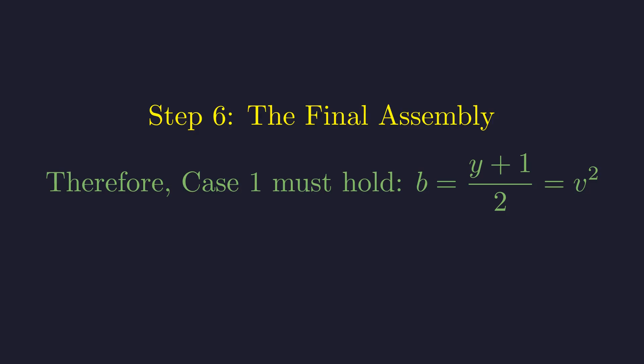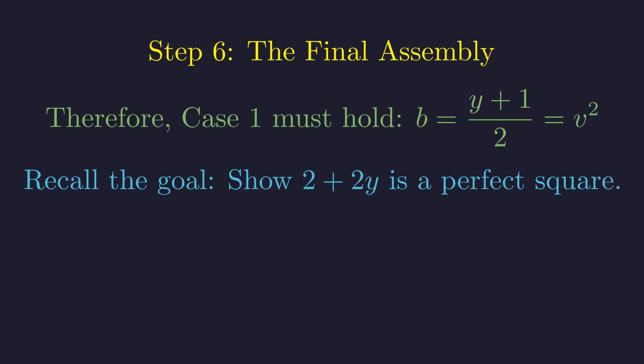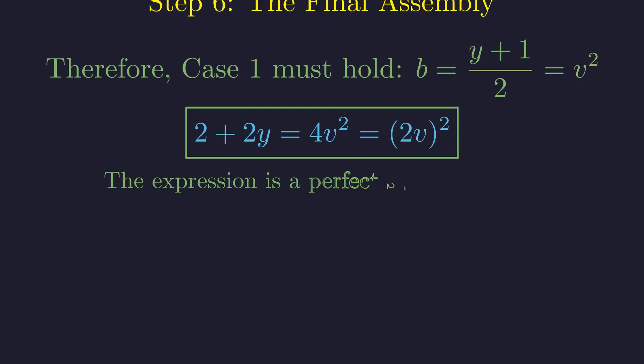We conclude that b, which is the quantity y plus 1 over 2, must be a perfect square v². Let's return to our simplified expression 2 plus 2y. Factoring out a 2 gives 2 times the quantity y plus 1. From our conclusion in Case 1, we know that y plus 1 equals 2 times v². Substituting this yields 2 times the quantity 2v². The result is 4v², which is the square of 2v. As v is an integer, the proof is complete.